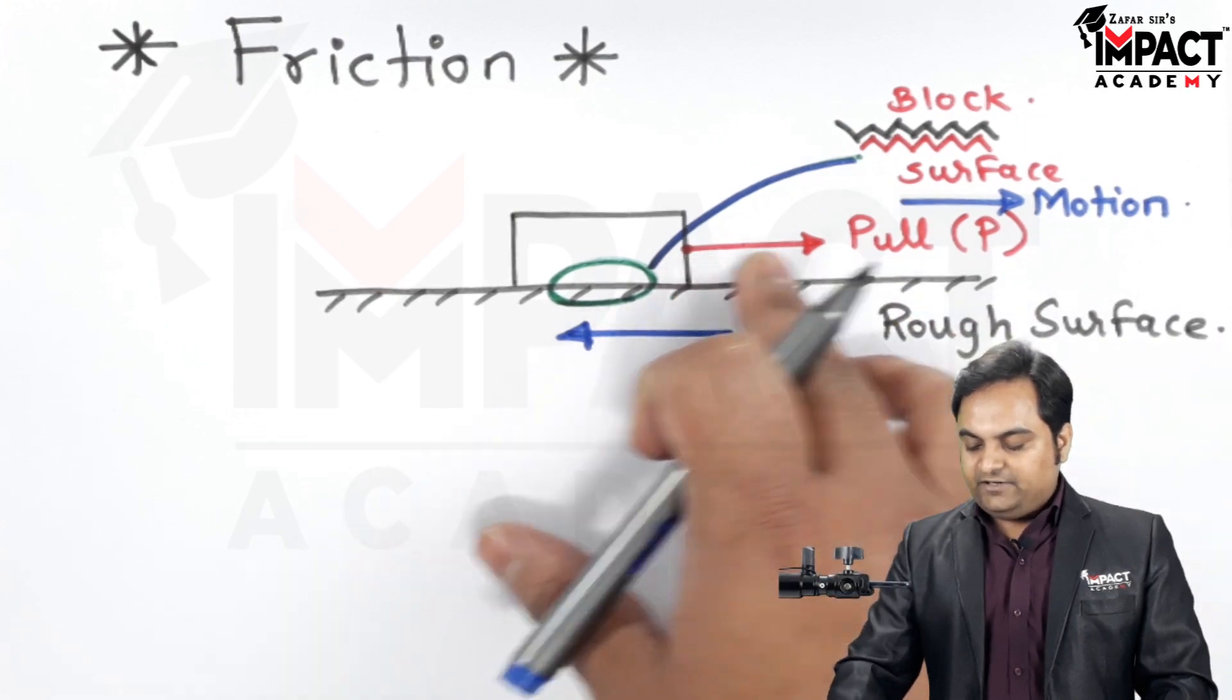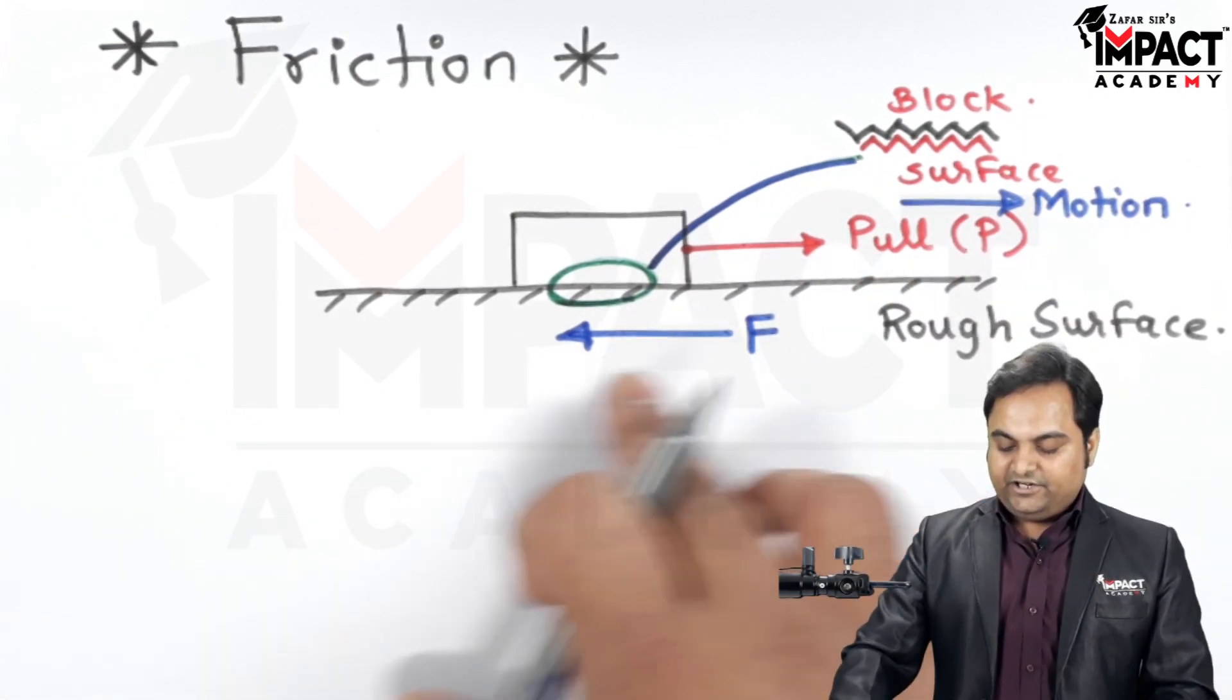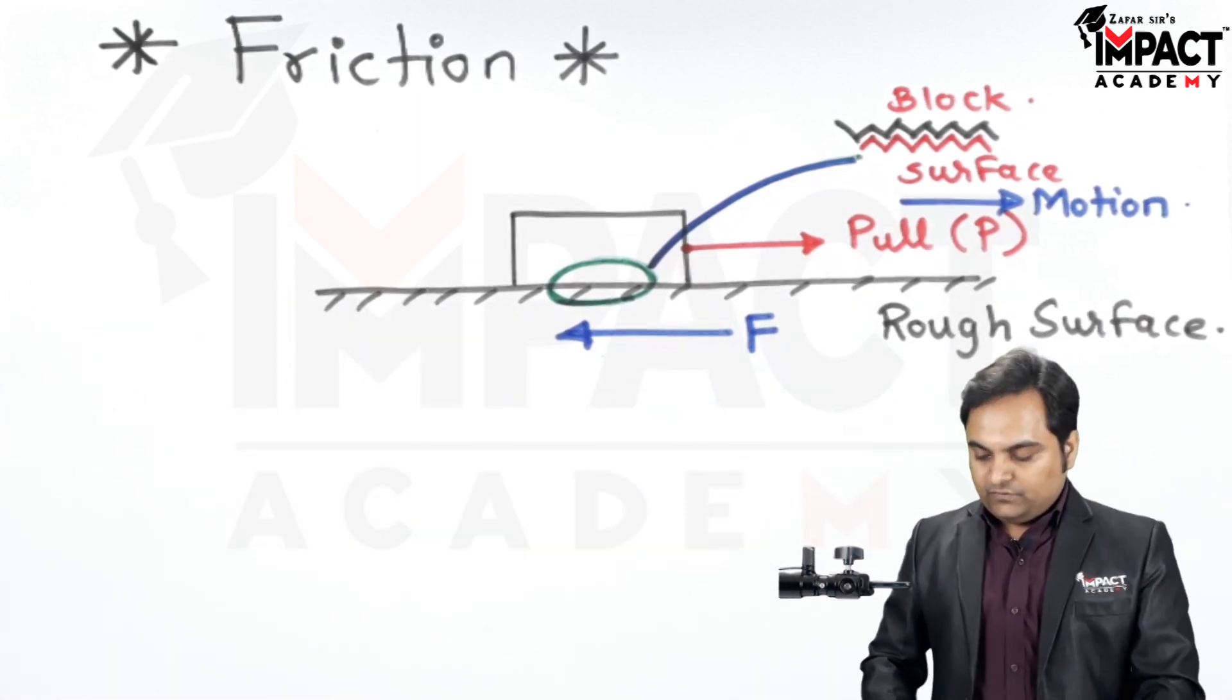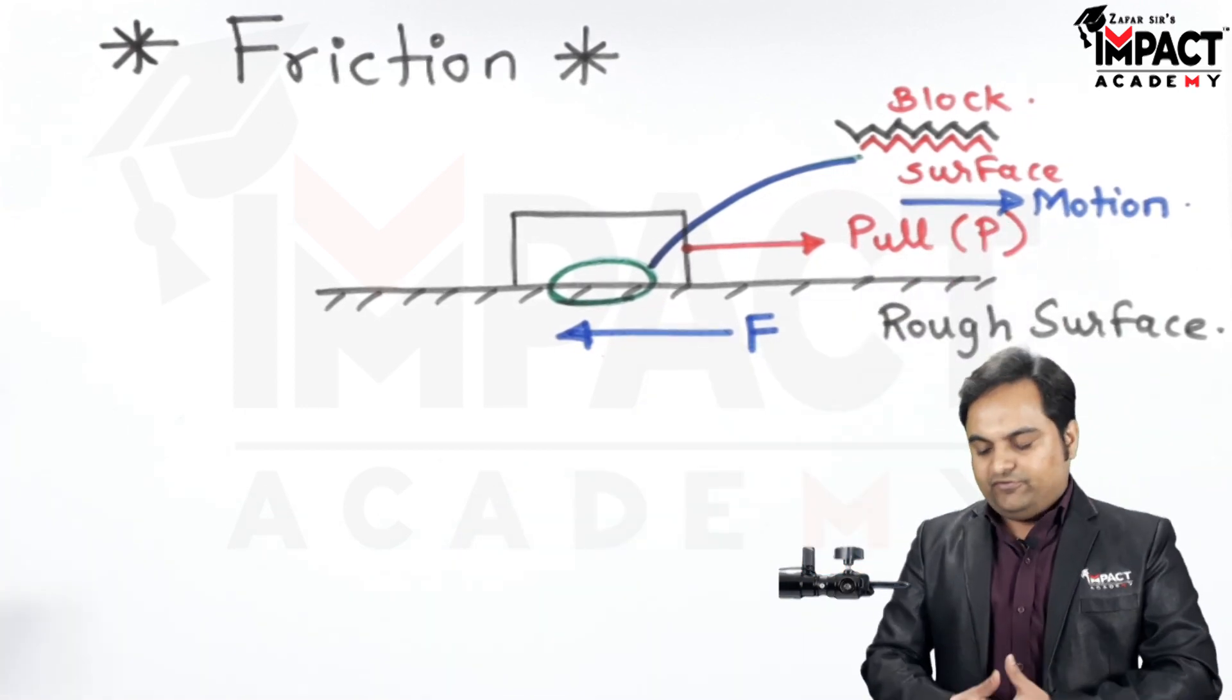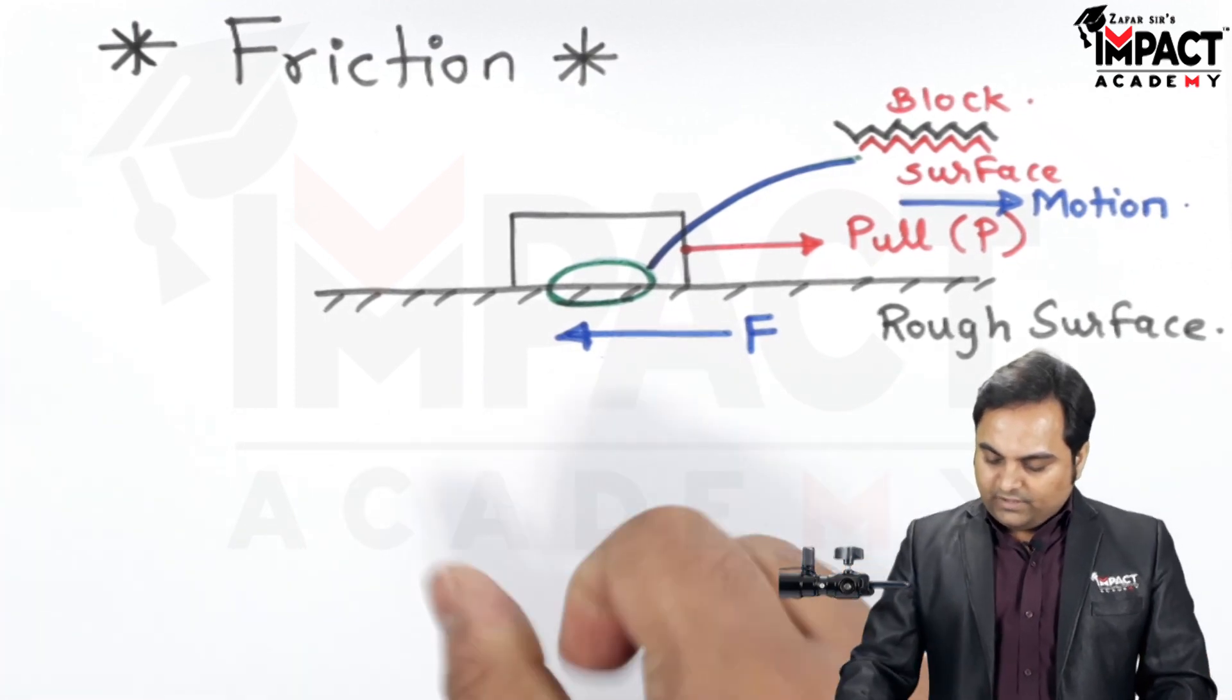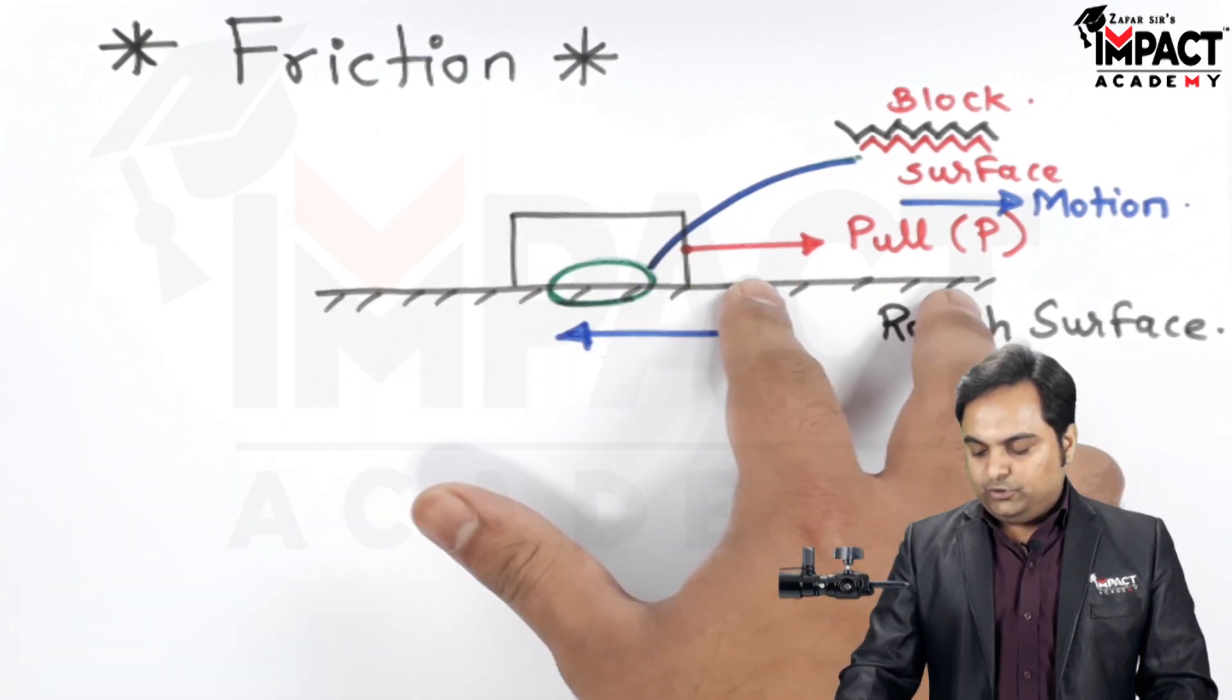As we can see here when we are trying to pull the block towards right, there is a friction force which was acting towards left and this friction force would try to reduce the velocity of motion. It would offer resistance to this block and then there would be loss of energy in this block when we are trying to pull it.